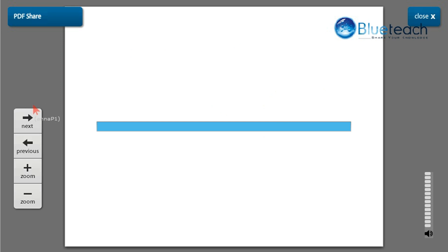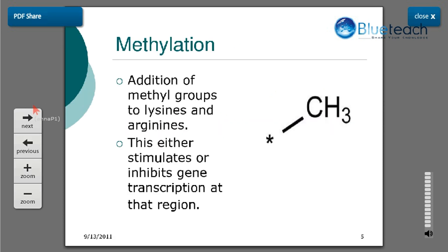The next modification is methylation, which is the addition of methyl groups to lysine and arginine residues. Depending upon the position or specific amino acid residue which gets methylated, the transcriptional activity is different — this can either stimulate or inhibit gene transcription at that region.